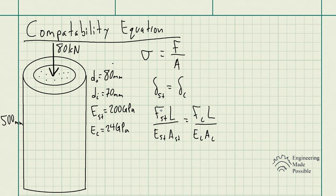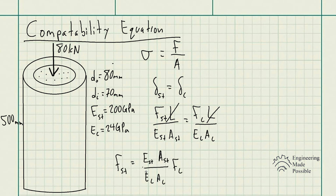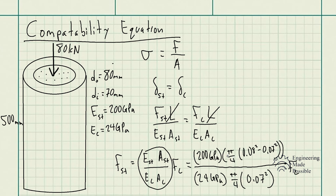Writing the equations: the force in the steel times length divided by the modulus of elasticity of steel times its cross-sectional area equals the force in the concrete times length divided by the modulus of elasticity of concrete times its cross-sectional area. Since the length is 500 millimeters and is the same for both, it cancels out. For the cross-sectional area of the steel, subtract the inner area from the outer area (outer diameter minus inner diameter areas). After algebraic manipulation, we develop a relationship between the steel force and concrete force.